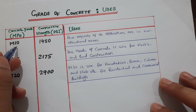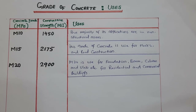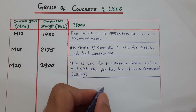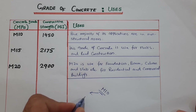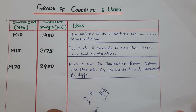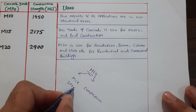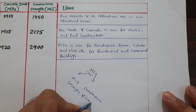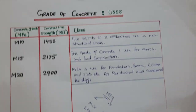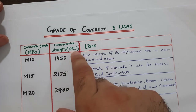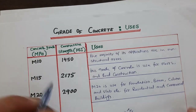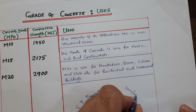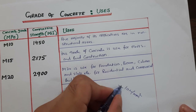The first grade is M10. M stands for mix and 10 is the compressive strength of concrete after 28 days. This is measured in MPa, which is megapascal, or Newton per mm². So M10 means 10 Newton per mm² compressive strength.